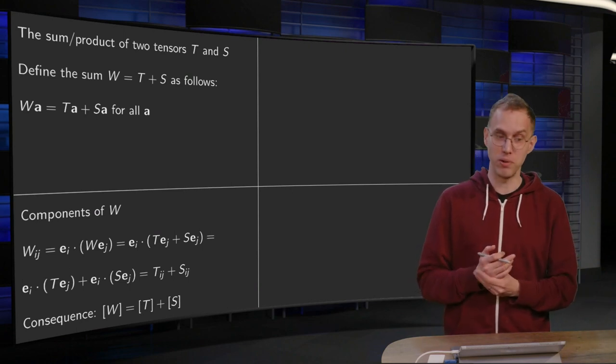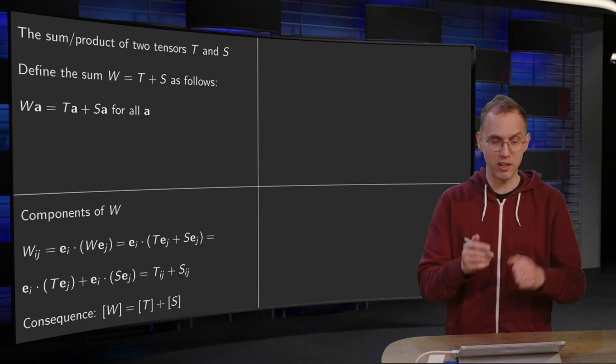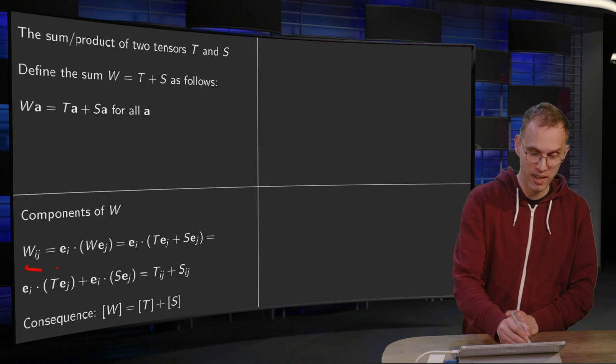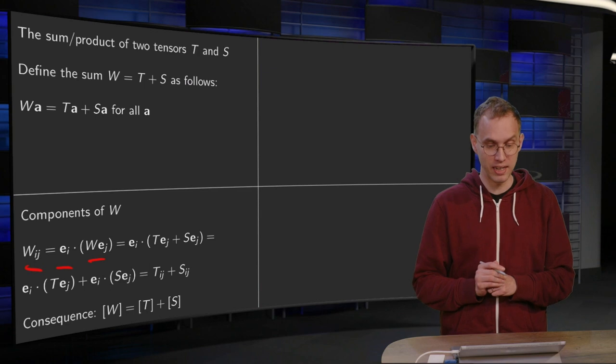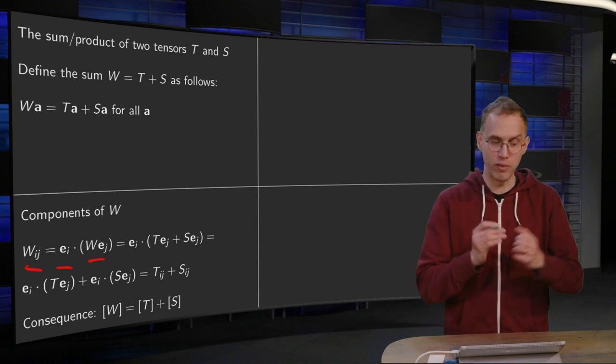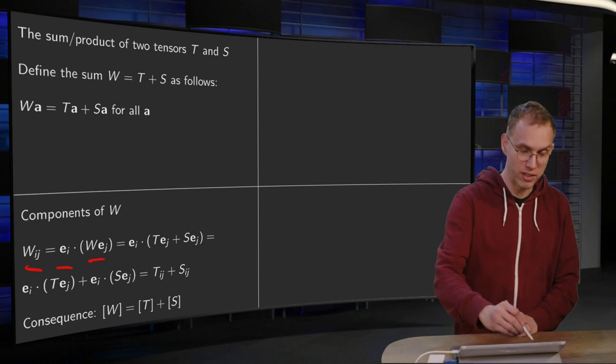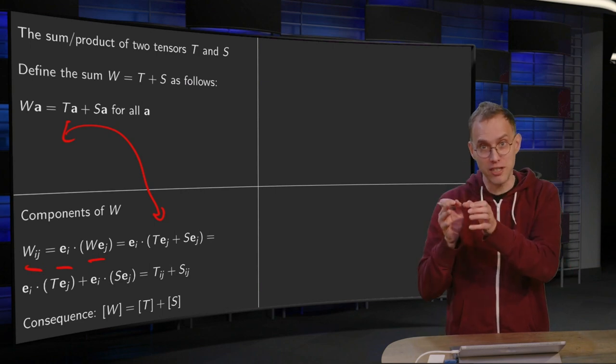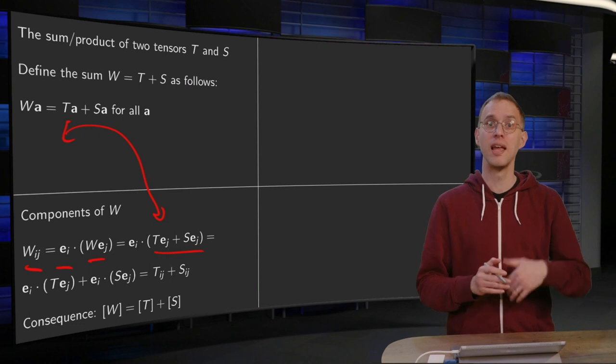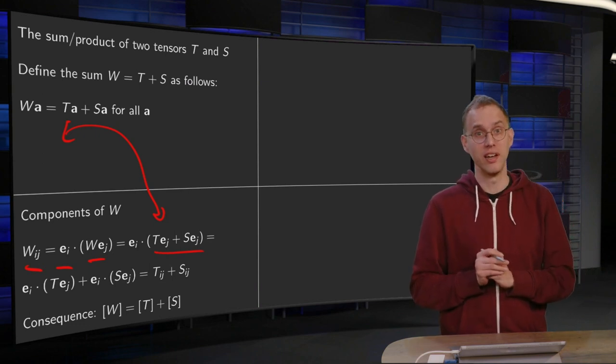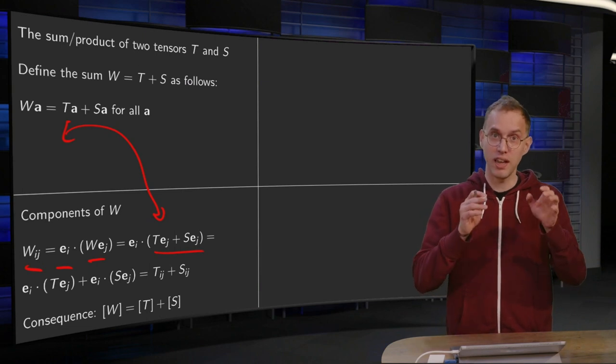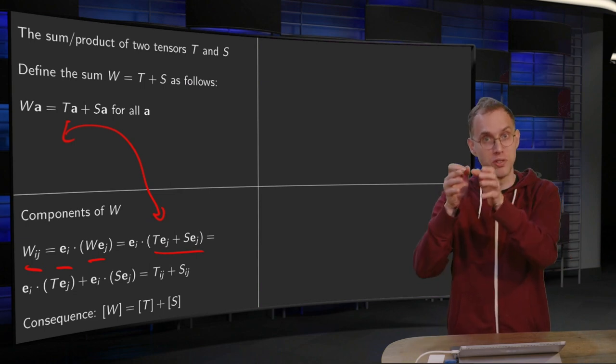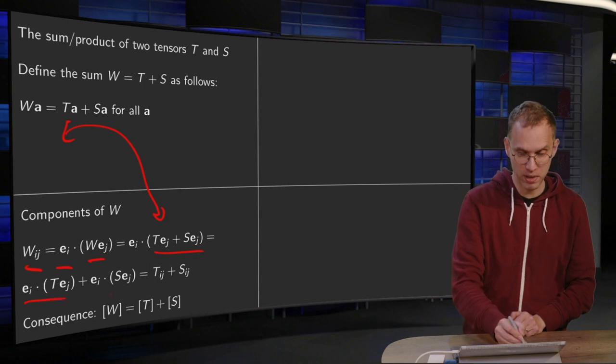So what happens to the components? We know this is one of those formulas you learned by heart. That the W_IJ is given by e_i inner product with W e_j. Now, how do we compute the W working on e_j? It was defined as compute the T of e_j and the S of e_j and add them up. So that's the definition. Then we have an inner product. An inner product is linear. So the inner product of e_i with the sum equals e_i times the inner product with the first one, plus e_i inner product with the second one.